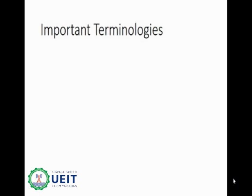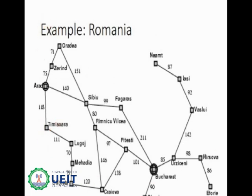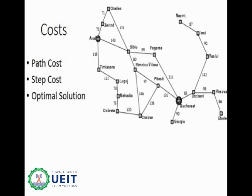Here are some important terminologies. The transition model describes what each action does. The initial state, actions, and transition model together implicitly define the state space of the problem. For the Romania map, the complete map is the state space — it defines actions from Arad, the successor functions, the transition model (e.g., after moving from Arad to Sibiu, you are at Sibiu), and the initial state Arad. A graph is a directed network where nodes are states and links between nodes are actions. A path in the state space is a sequence of states connected by a sequence of actions.